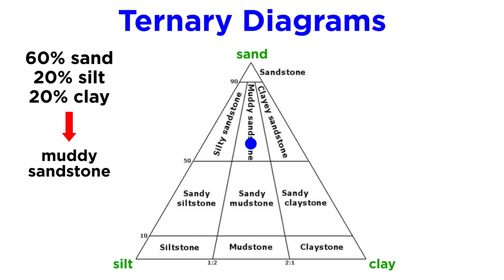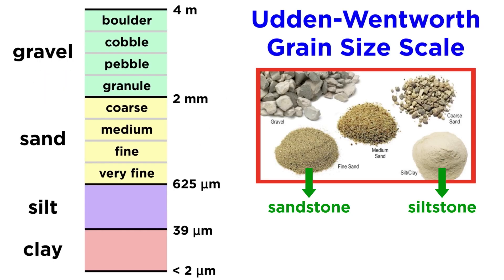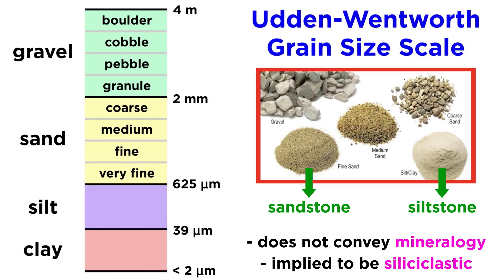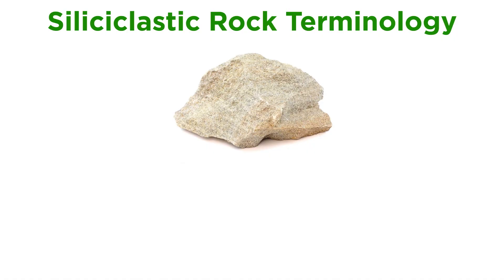It is important to choose the appropriate ternary diagram when classifying a rock. For example, you would not use a ternary diagram with gravel as a component for a rock that does not contain gravel. Furthermore, it is important to recognize that the classification of a rock as a sandstone, siltstone, or otherwise says nothing about its mineralogy, though it is implied to be siliciclastic, mainly because the biochemical and chemical rocks follow a different classification scheme. Before we explore the main types of siliciclastic rocks, we must cover some terminology so we can better describe them.